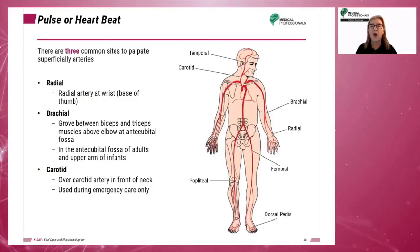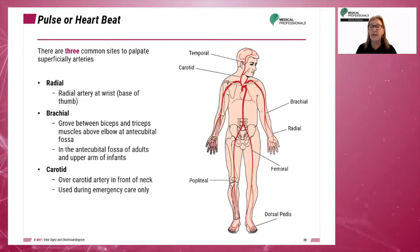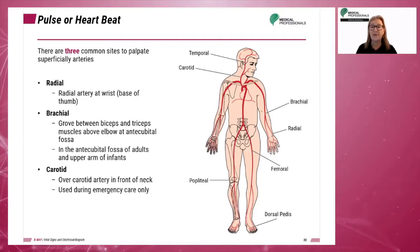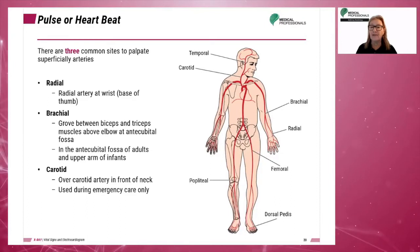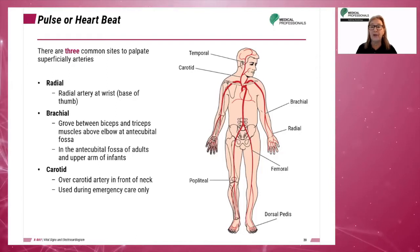Three common sites are often used to palpate superficial arteries. The radial artery is located at the wrist by the base of the thumb and is the most common pulse point. The brachial artery is located in the groove between the biceps and triceps muscles above the elbow in the antecubital fossa of the upper arm. The carotid artery is in the front of the neck and is used during emergency care only.